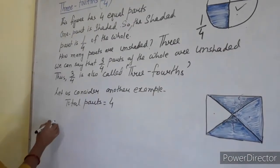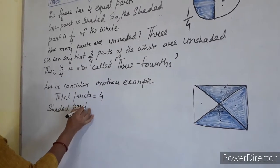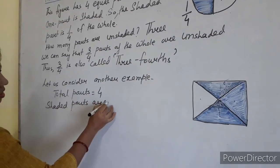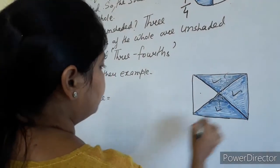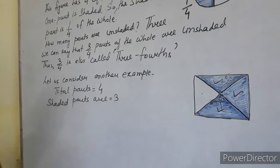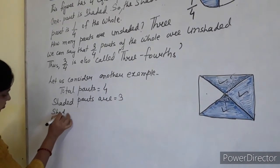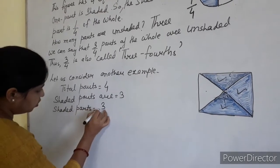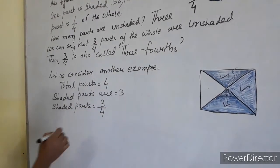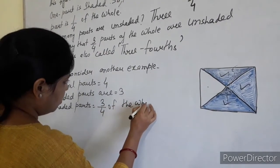So, among them, the shaded parts are 1, 2, 3. 3. So, we can write, shaded parts equal to 3 by 4th of the whole.